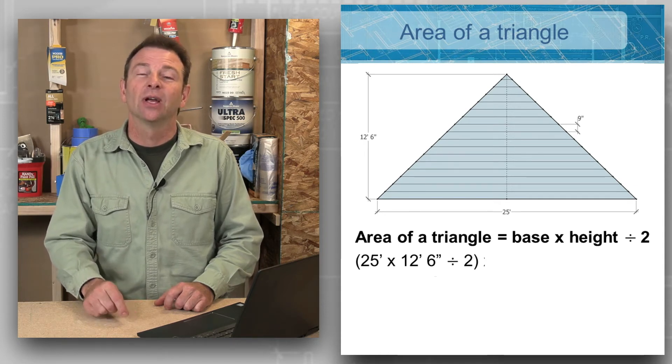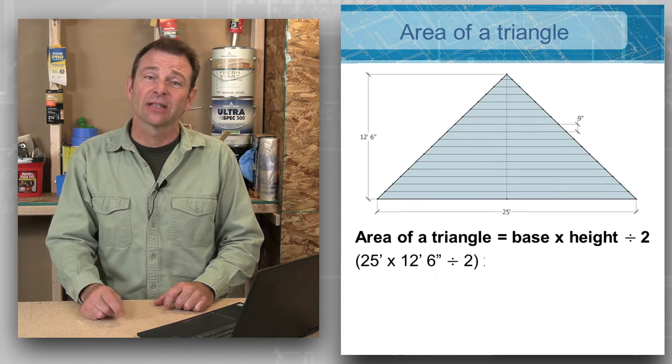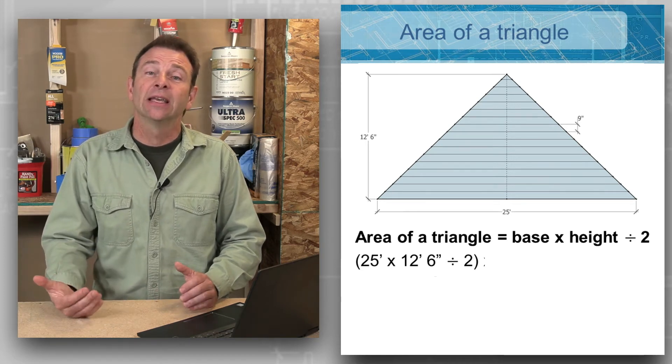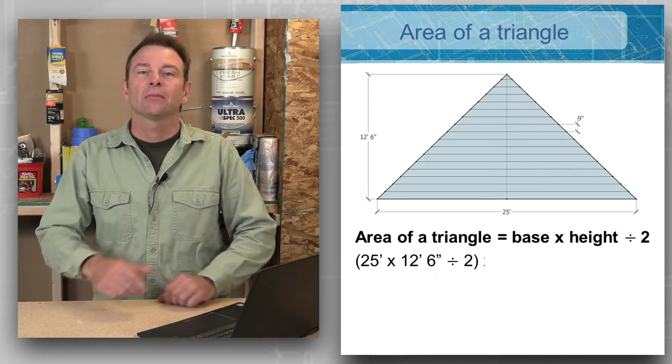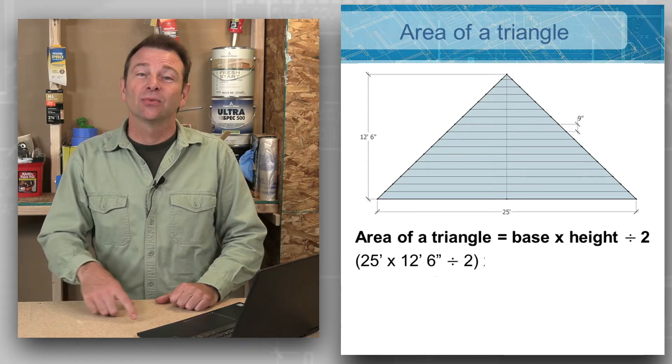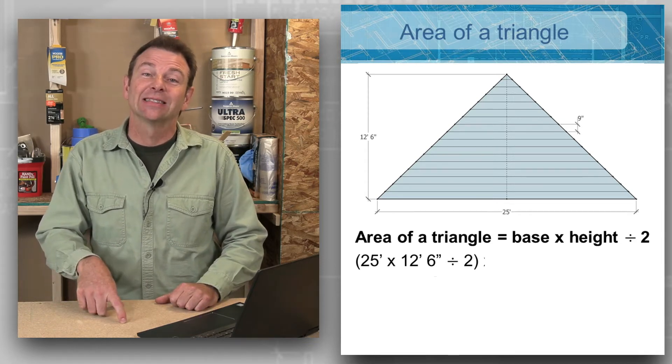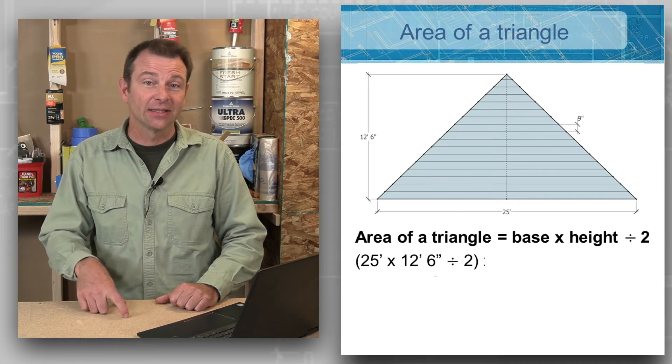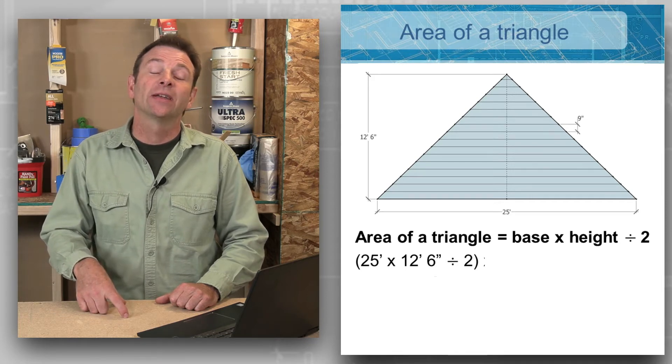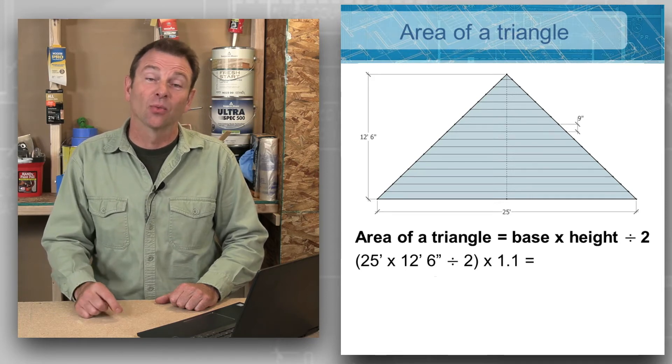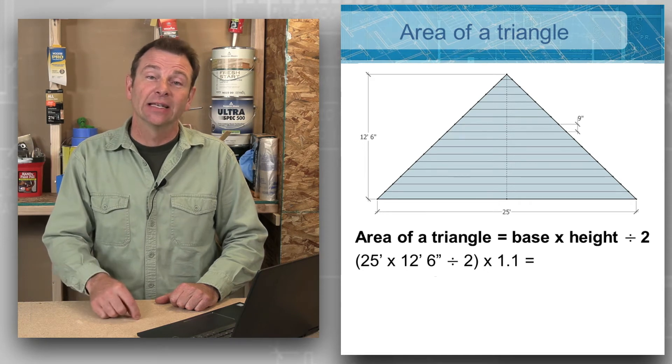We also at the end of this need to calculate or figure in the hidden amount of our siding. If you consider that each row or piece of siding is 10 inches tall but only nine inches is exposed, we can figure that 10 percent or one inch of that siding is being concealed. So when we calculate this we need to add an extra 10 percent.